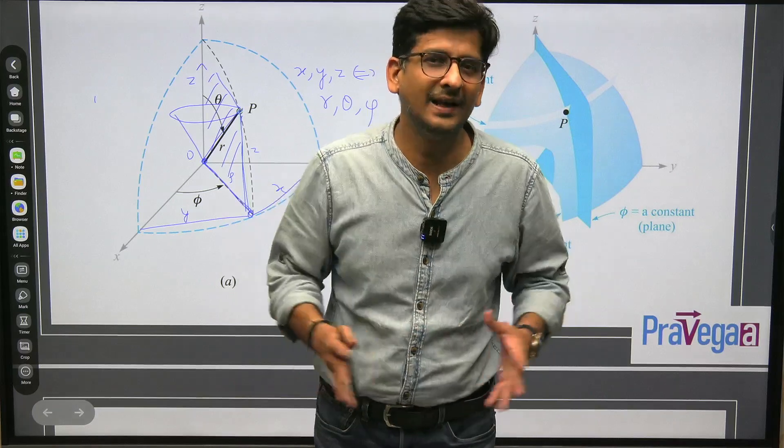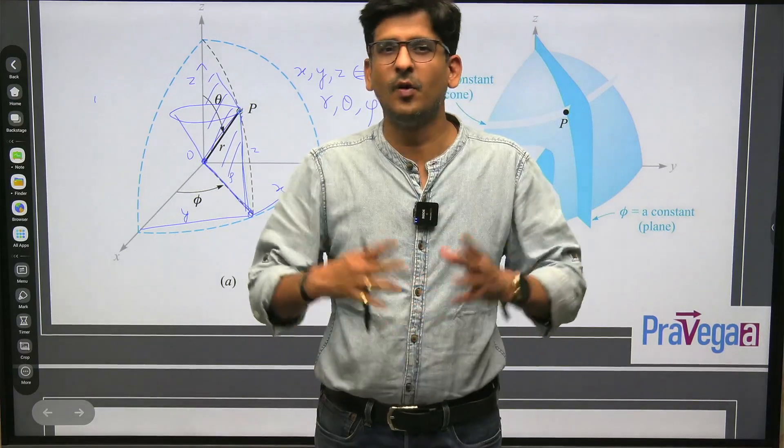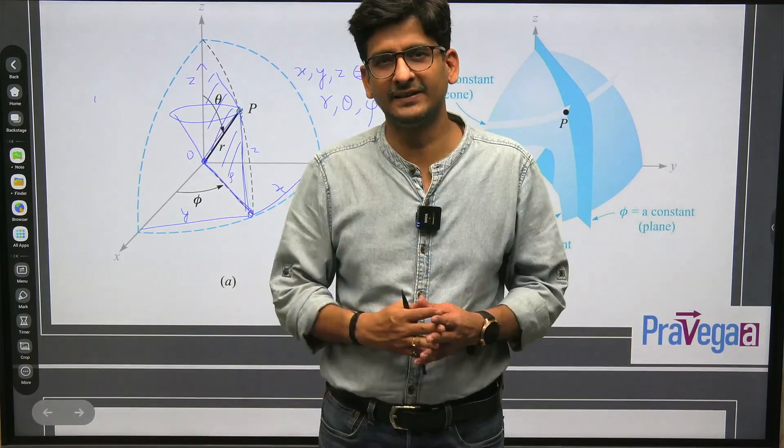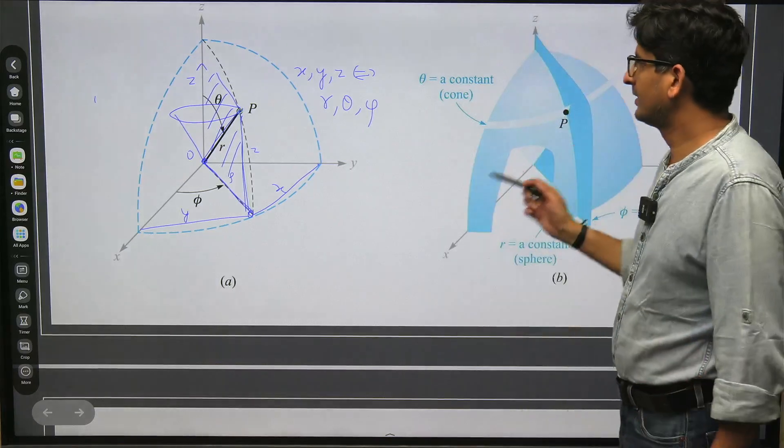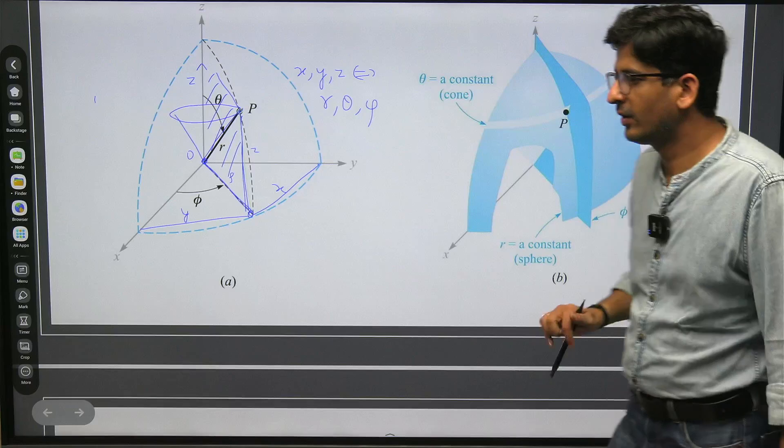So all these three surfaces intersect at point P. You remember what happened in rectangular coordinate system, three planes intersected. What happened in cylindrical coordinate system, three planes intersected. And the same thing is happening here. Three planes getting intersected in a spherical polar coordinate system too.